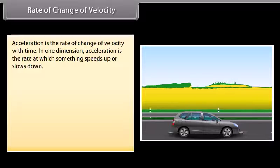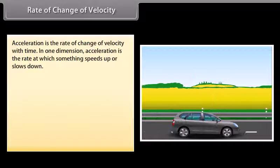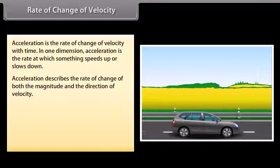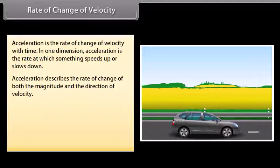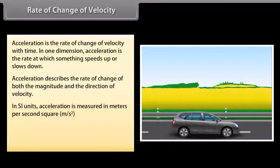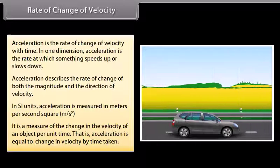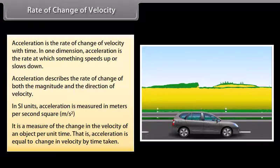Acceleration is the rate of change of velocity with time. In one dimension, acceleration is the rate at which something speeds up or slows down. Acceleration describes the rate of change of both the magnitude and the direction of velocity. In SI units, acceleration is measured in meters per second squared. It is a measure of the change in velocity of an object per unit time — that is, acceleration = change in velocity / time taken.